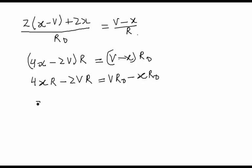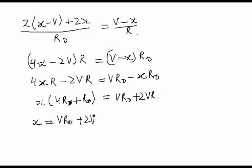From here we will get the value of X as: X into 4R plus R0 equals VR0 plus 2VR. So the value of X that we have got is X equals VR0 plus 2VR upon 4R plus R0. This is the value of X.